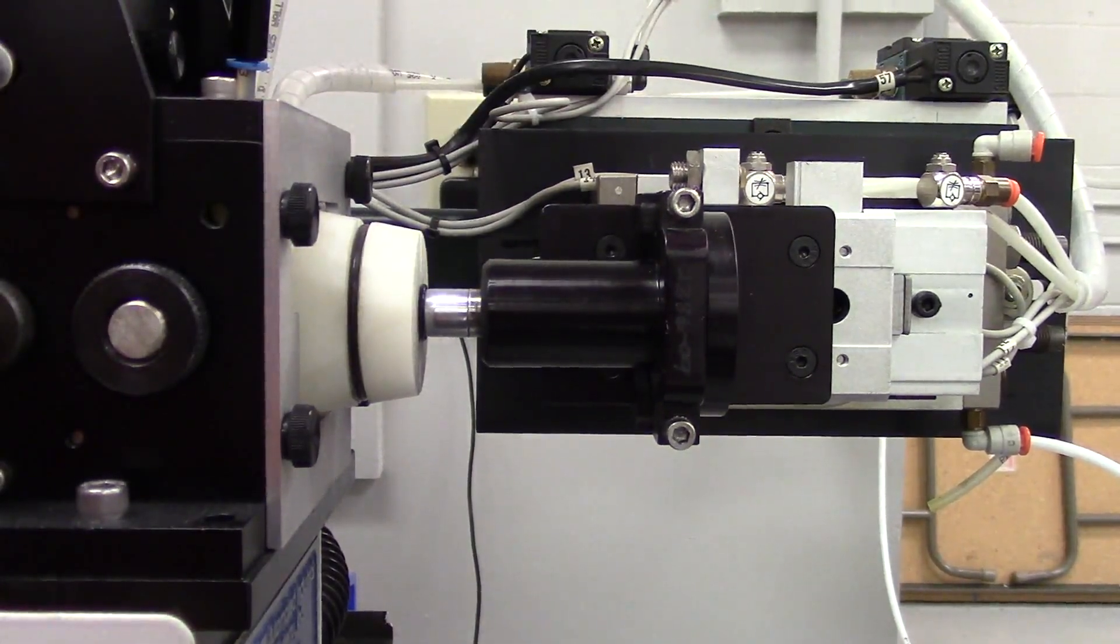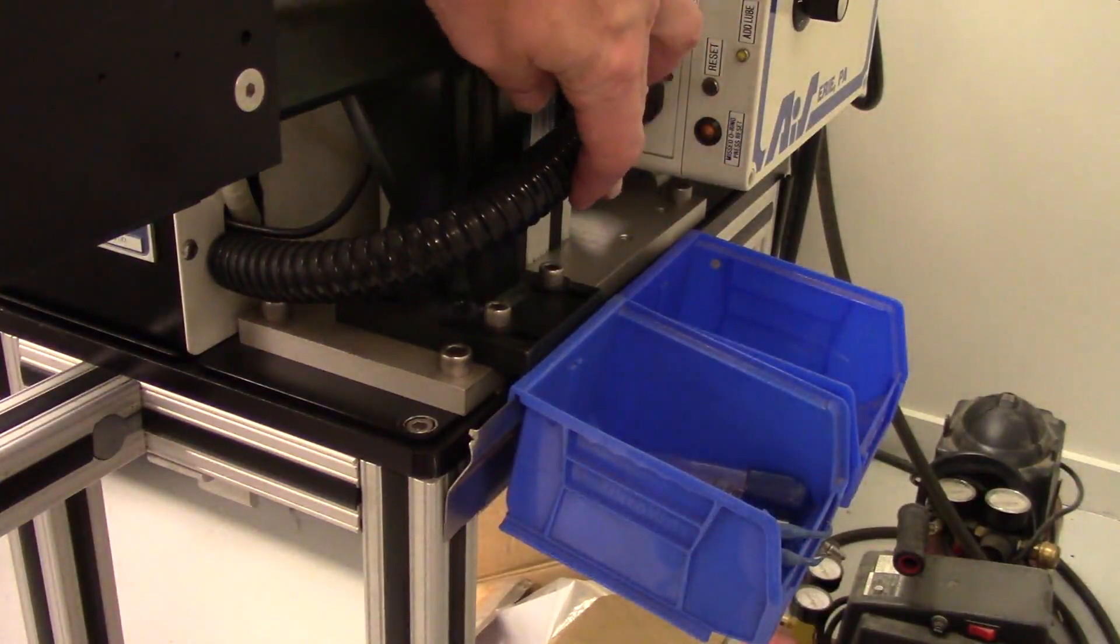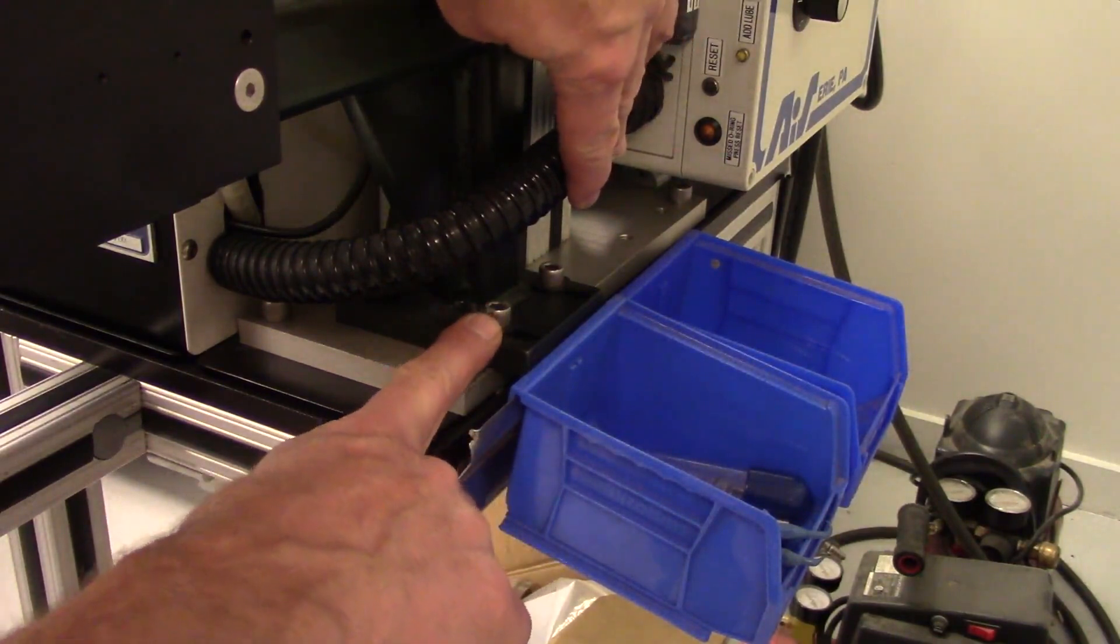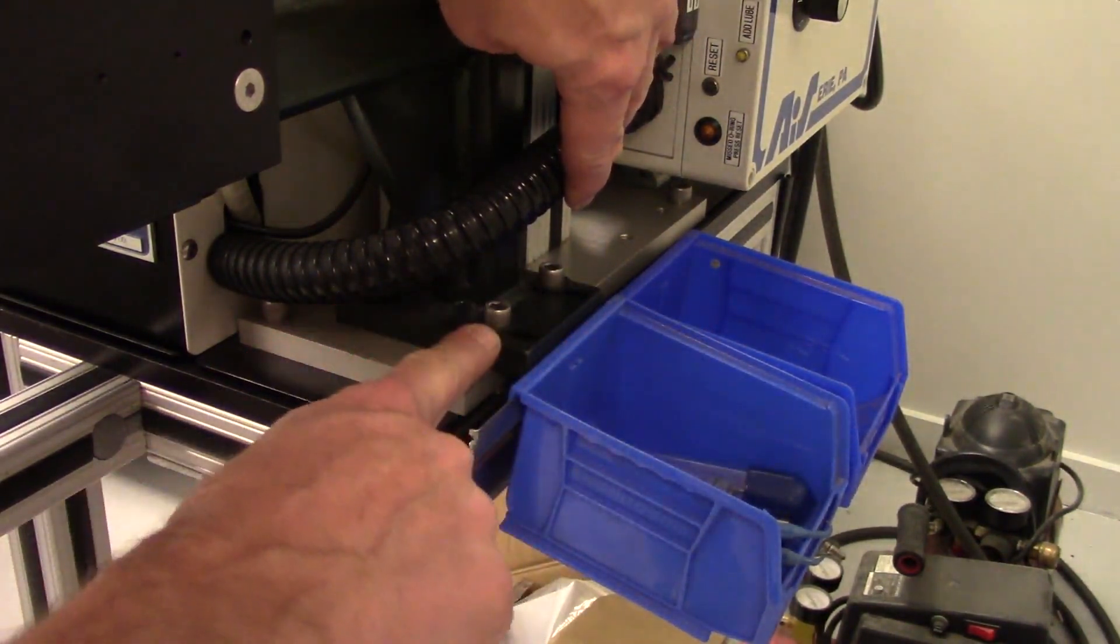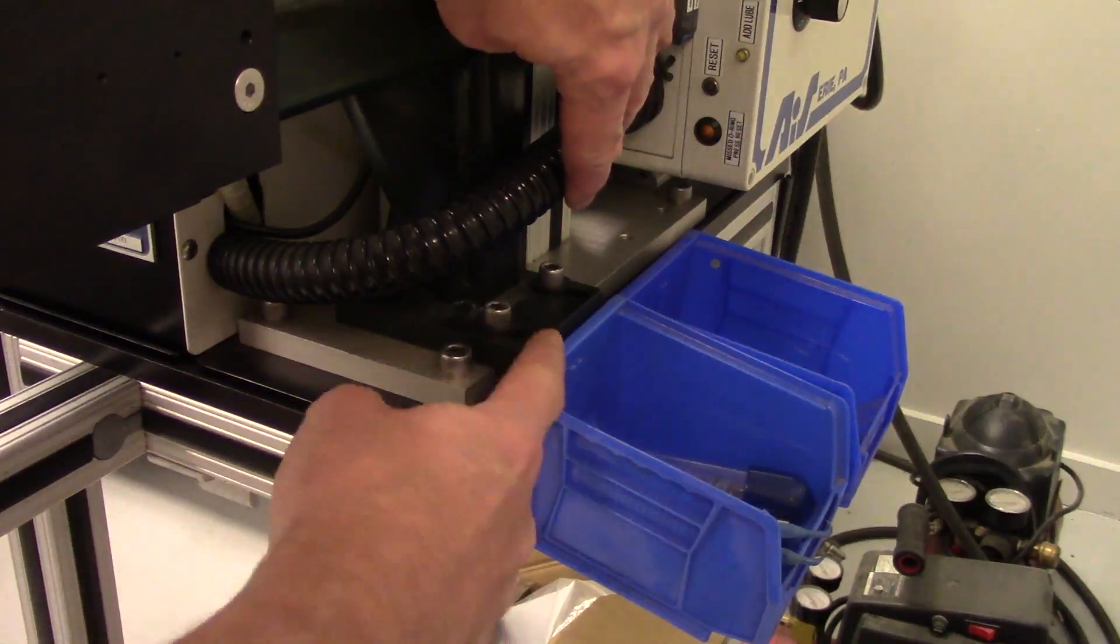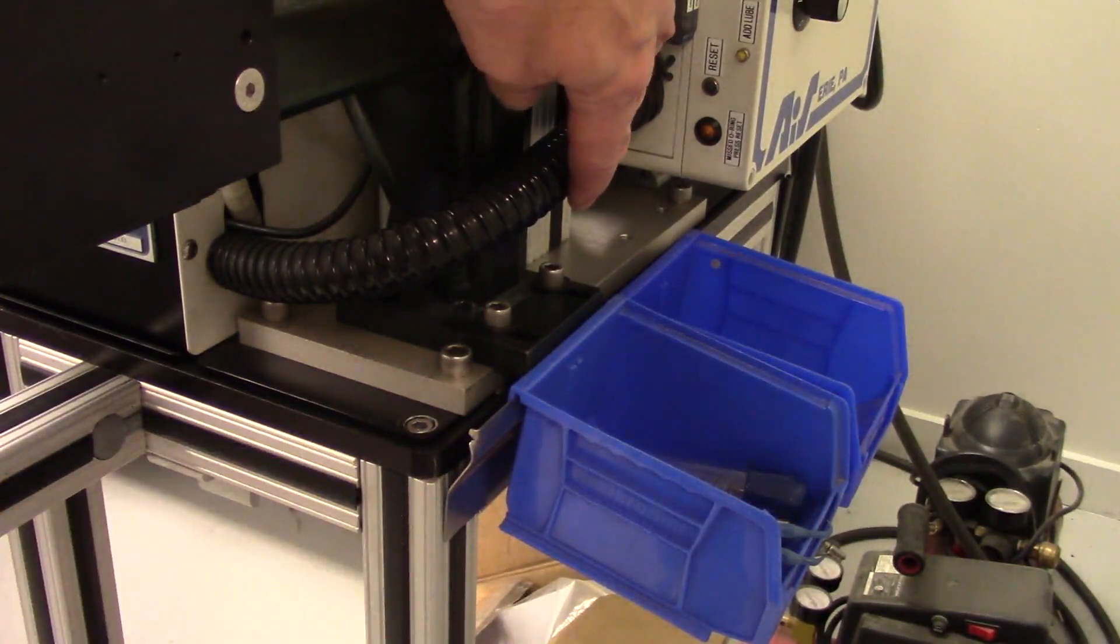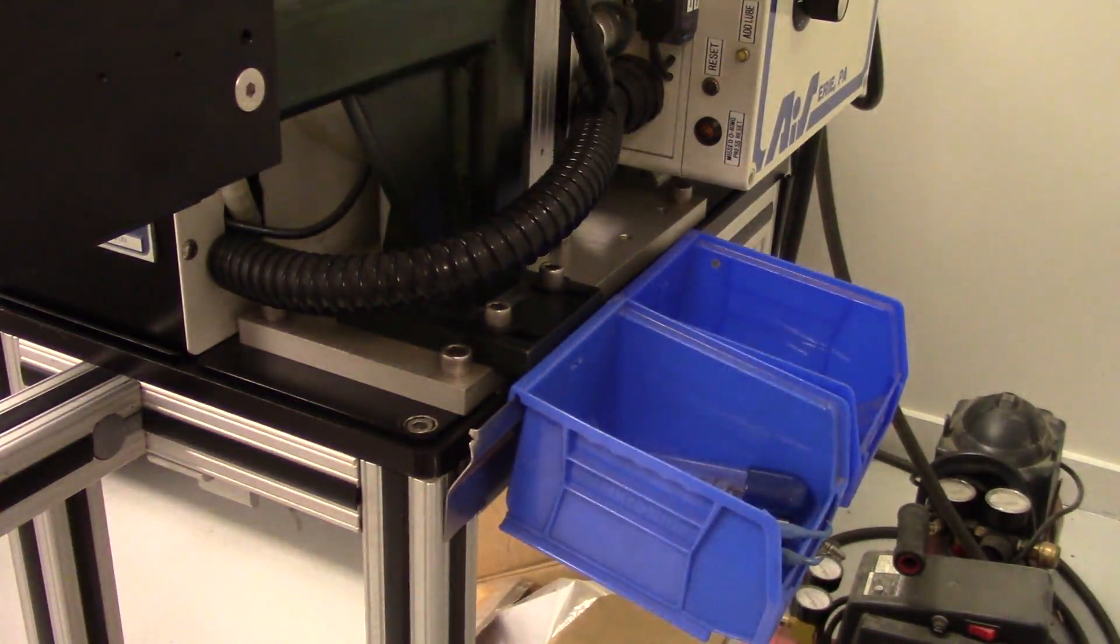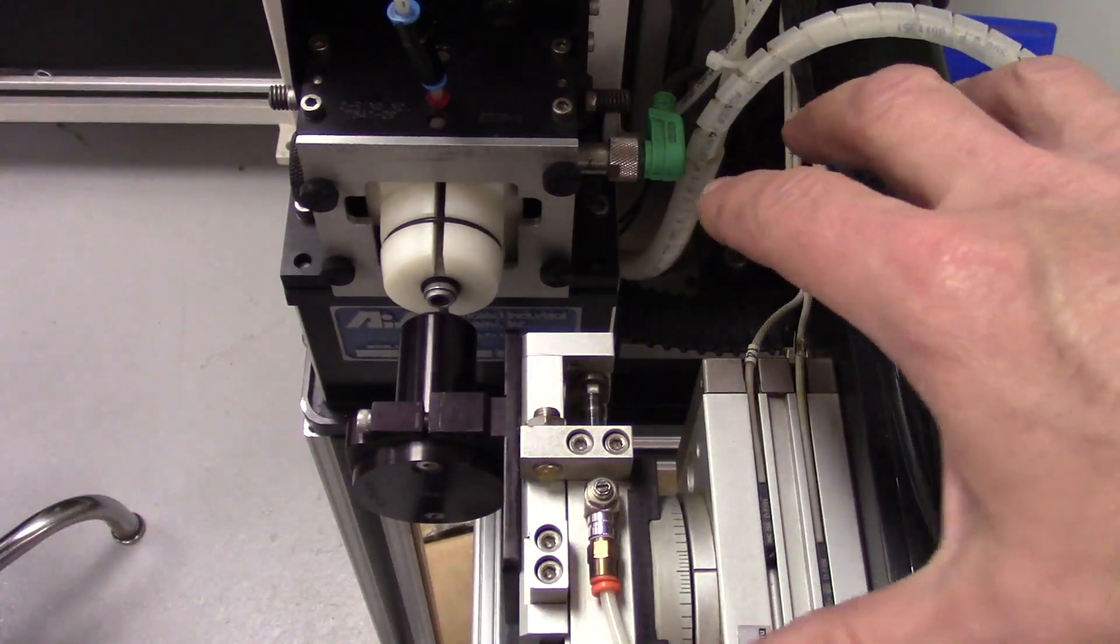At the base of our VPM arm, you can see that there are five sixteenths socket head cap screws. There's a quantity of four of them, there's slotted holes that they go through and mount into the base plate. I'm going to move the camera to show what we're looking for.